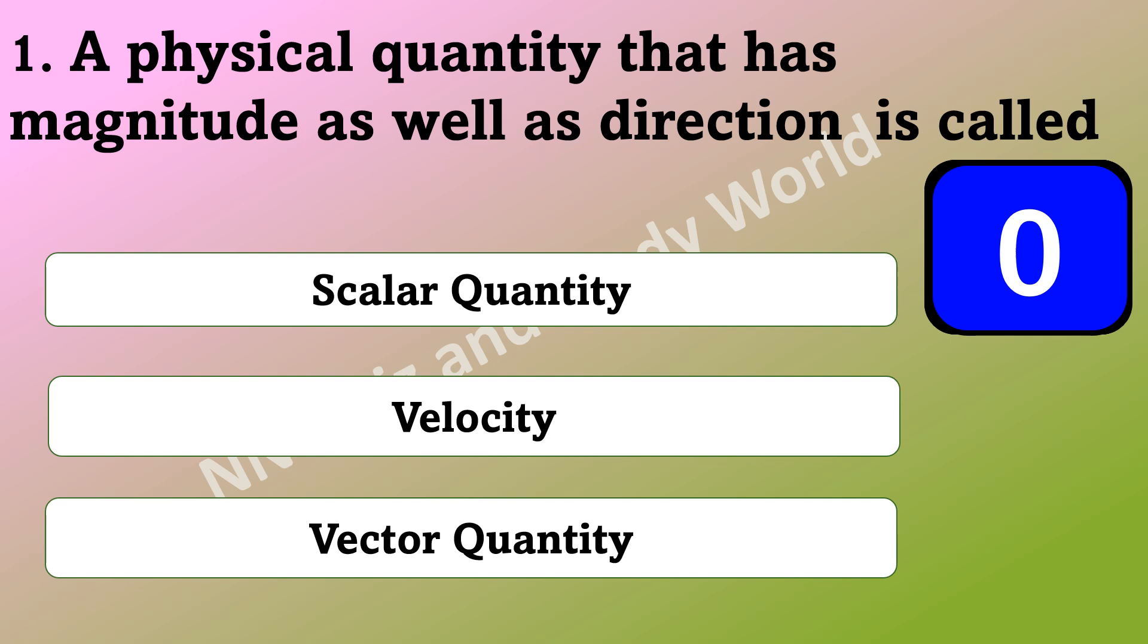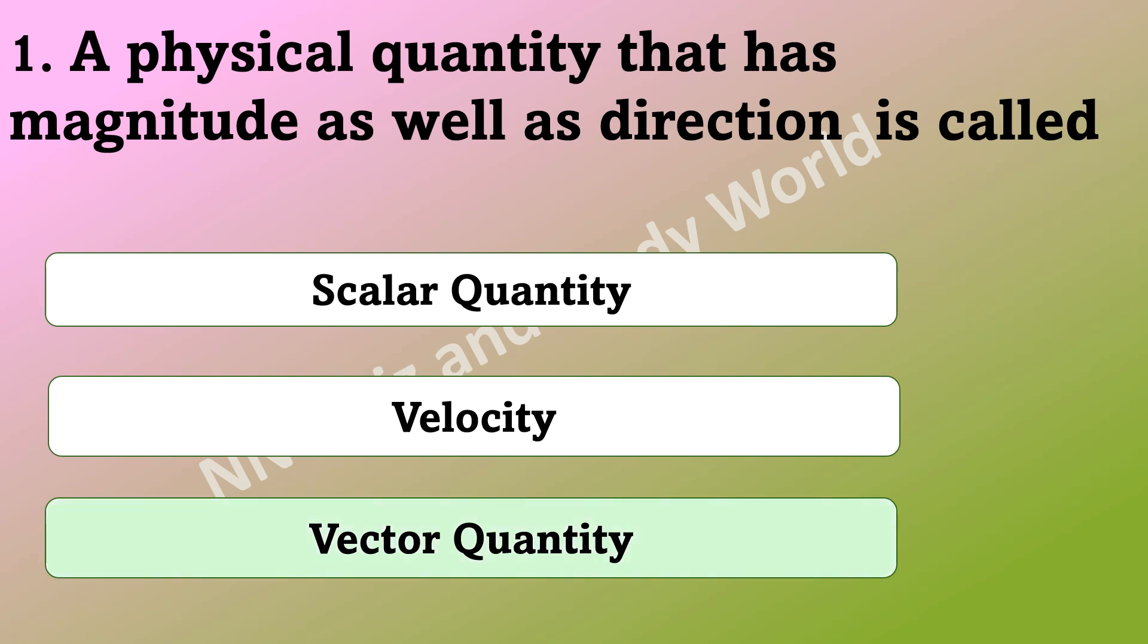What is the physical quantity that has magnitude as well as direction called? Is it scalar quantity, velocity, or vector quantity? The answer is vector quantity.